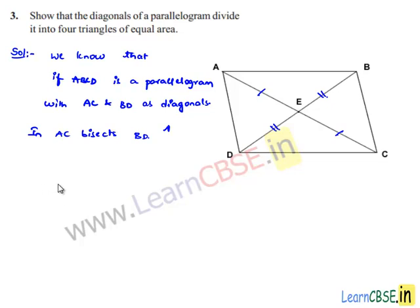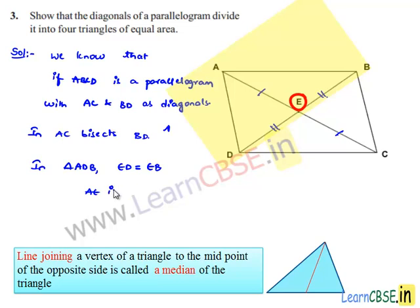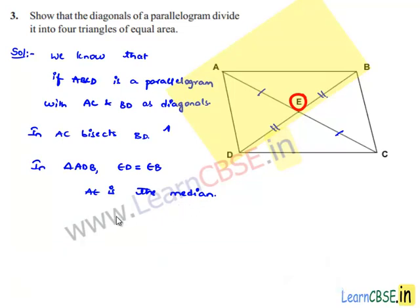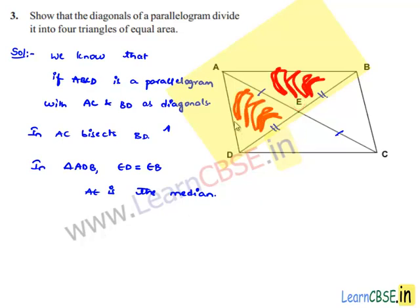Now let us consider triangle ADB. Here ED is equal to EB. Therefore, we can say that AE is a median of triangle ADB. As AE is a median, in triangle ABD it divides triangle AED and triangle AEB into equal areas.